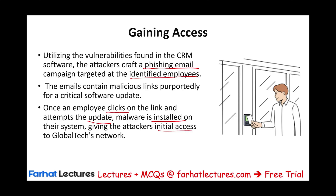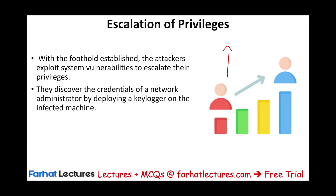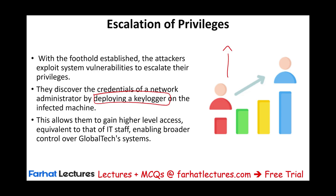Once access is gained and a foothold is established, the attacker exploits system vulnerabilities to escalate their privileges. They discover the credentials of a network administrator, perhaps by deploying a keylogger on the infected machine. This allows them to gain higher-level access equivalent to or greater than that IT staff member, enabling broader control over the Global Tech system. The third step is to escalate privileges so you have more access.